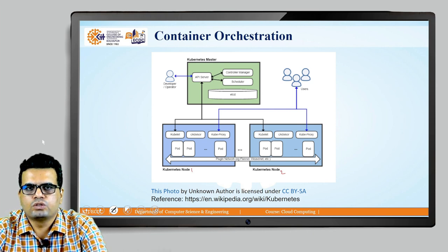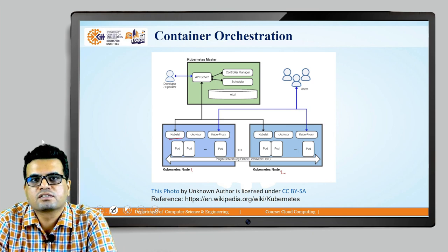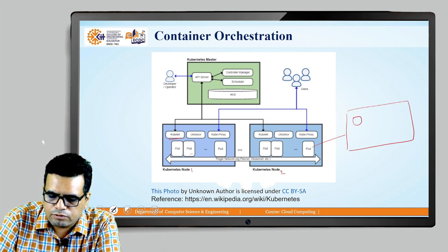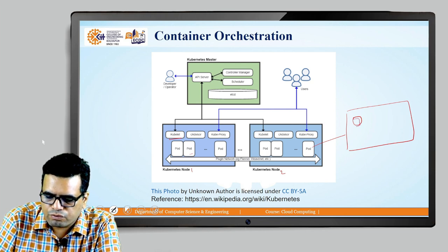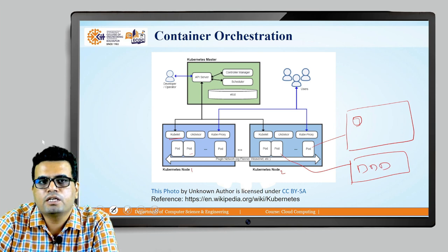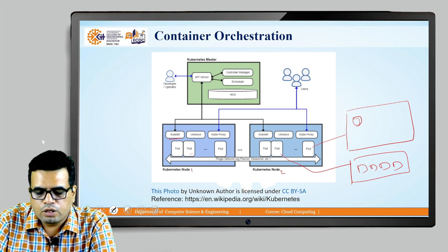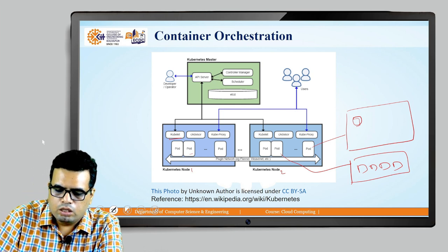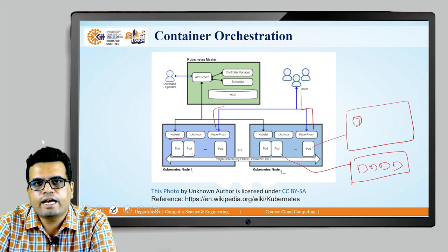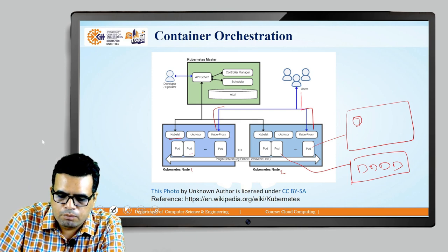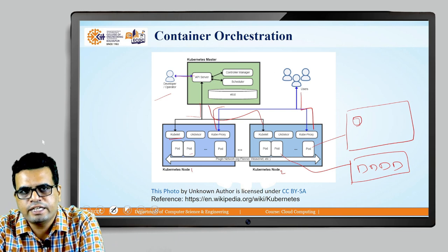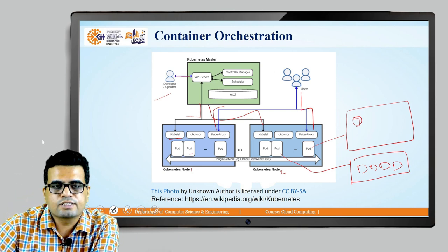If you look at the Kubernetes nodes, inside them you will find a component called kubelet, which refers to the microservice. There is a pod, and if we draw a bigger view of a pod, a pod may have a single container inside it, whereas another pod may have multiple containers. Together, these pods provide the necessary services to create a microservice. A user interacts with the kubelet to get the actual service, and these Kubernetes nodes interact with the master. The developer interacts with the API server for pushing updates, changing, or integrating new services in the architecture.